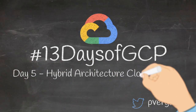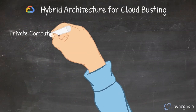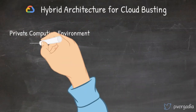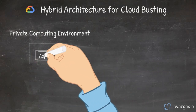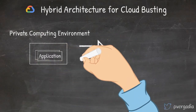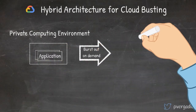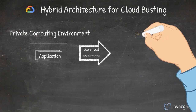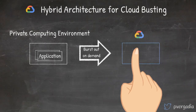Hybrid architecture for cloud bursting. You have your application deployed on-premise, use it for the baseline load, and burst to Google Cloud temporarily when you need extra capacity due to sudden increase in traffic.